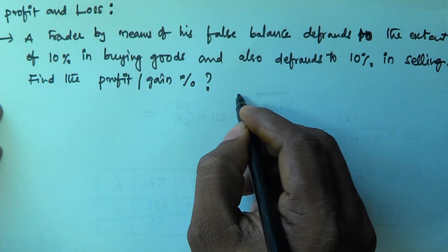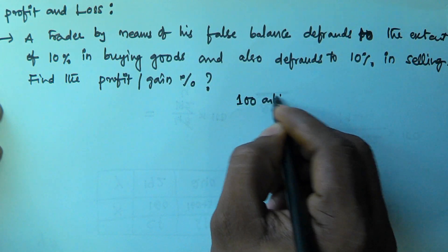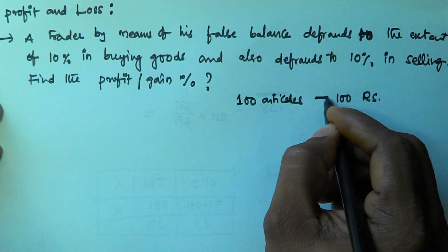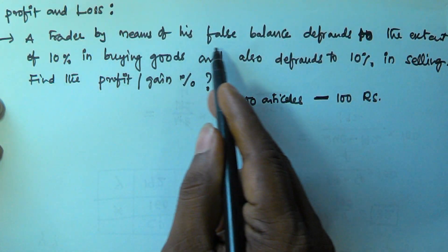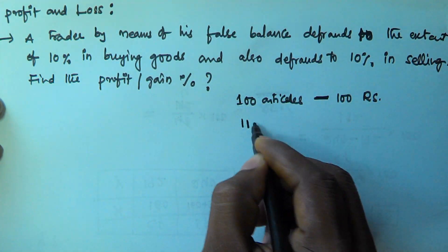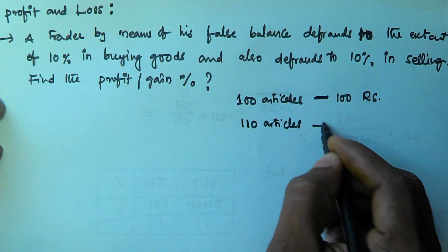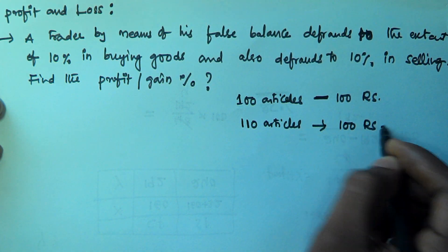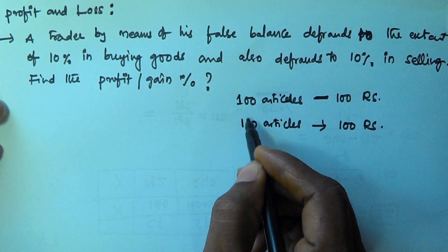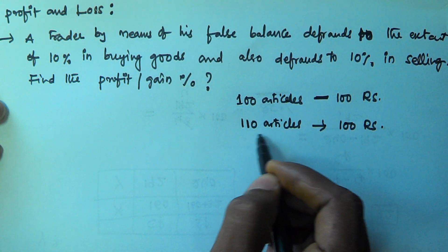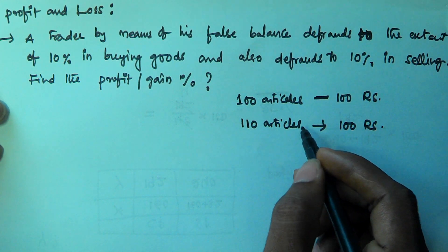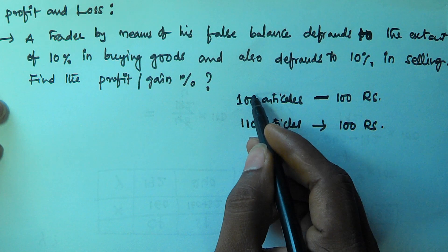Let us assume there are 100 articles, and the cost price of 100 articles is 100 rupees. But what this trader is doing — by means of his false balance he defrauds 10% in buying goods, so he is buying 110 articles for 100 rupees. The 10% of 100 is 10, so he buys 110 articles for 100 rupees.